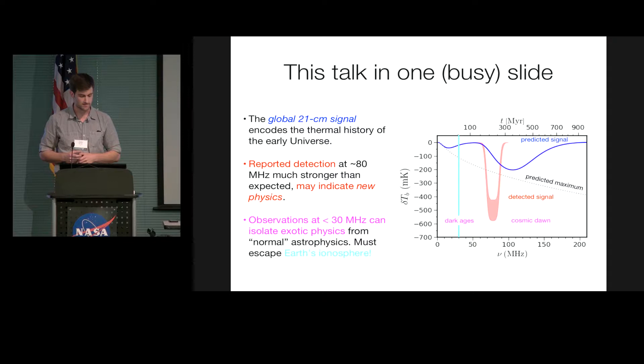But to do that, we need to observe at frequencies below about 30 megahertz, which, as you might know, is roughly the point where the Earth's ionosphere becomes opaque. It's a low-frequency radiation. So, to do that, to do these measurements, we need to escape the Earth's ionosphere.